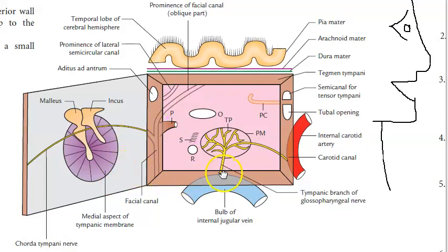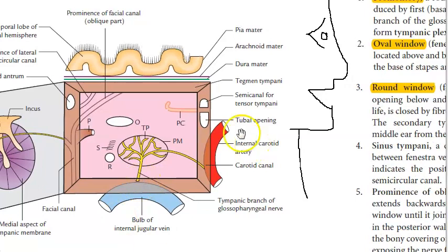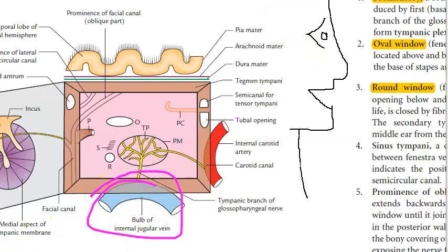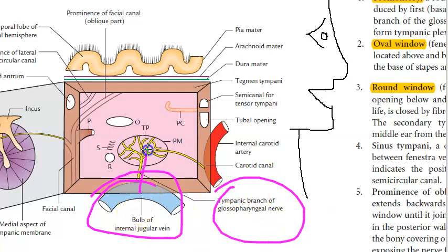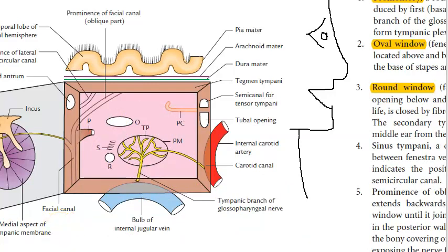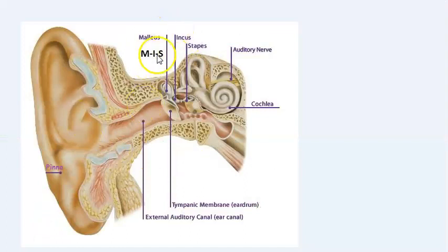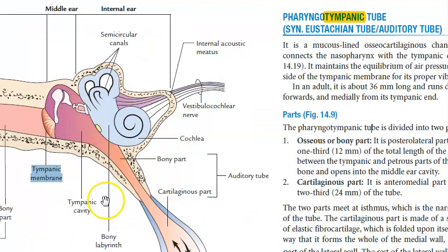Moving to the anterior wall — you will see the internal carotid artery. The floor: you will see the jugular bulb, which is the bulb of the internal jugular vein. A tympanic branch of the glossopharyngeal nerve pierces the floor between the jugular fossa, enters the tympanic cavity, and forms the tympanic plexus.